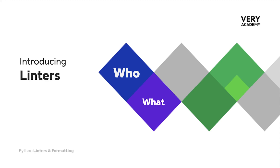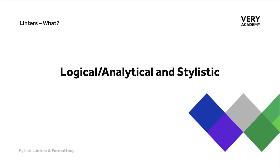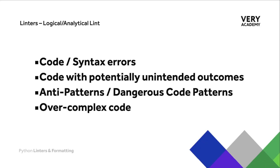Moving away from syntactical and stylistic problems, there is a little bit more to this. Linting tools can offer a range of different services. Linting tools can be broken down into different categories based upon their purpose: logical, analytical, and stylistic. The type of features you might find on logical or analytical linters include code or syntax errors, code with potentially unintended outcomes, analysis for anti-patterns, dangerous code patterns, security issues, and overly complex code.